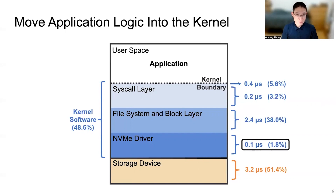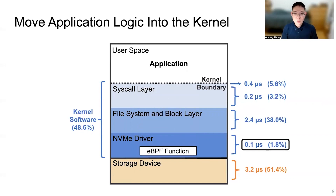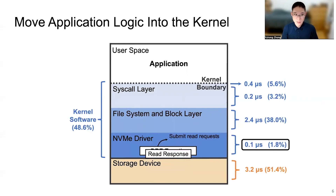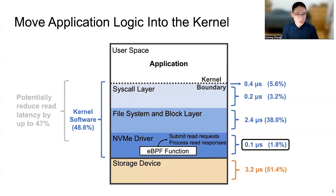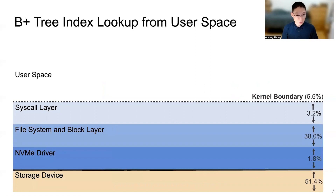Notice that the NVMe driver itself only accounts for 1.8% of the read latency. If the application can offload an eBPF function into the NVMe driver to submit a read request and process read responses, then we can potentially reduce the read latency by up to 47%, which is very close to the speedup achieved by the kernel bypass approach.